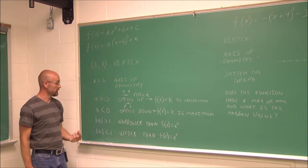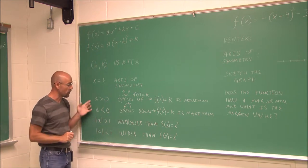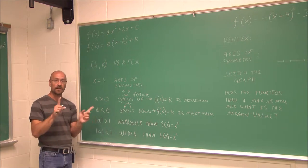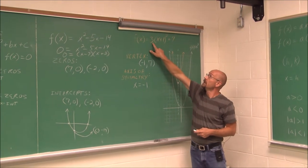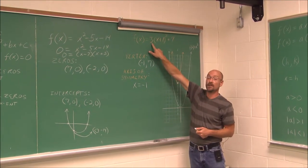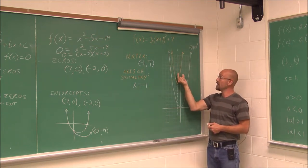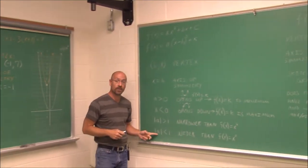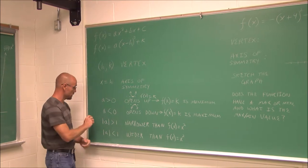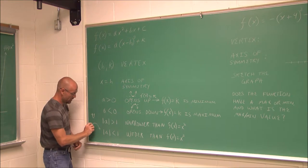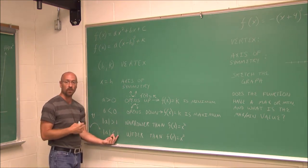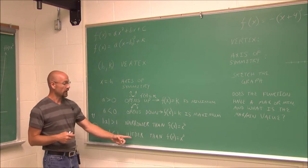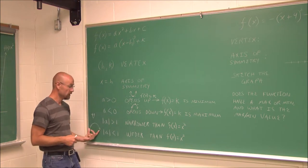The absolute value of a also tells me about the width of the parabola. If the absolute value of a is greater than 1, the parabola is narrower than the library function — skinnier. If it is less than 1 — meaning it's a fraction or decimal between 0 and 1 — the parabola is wider than the standard library function.